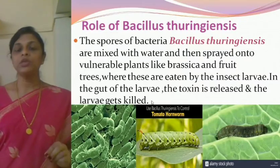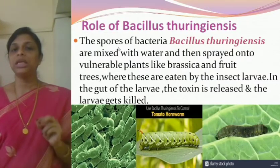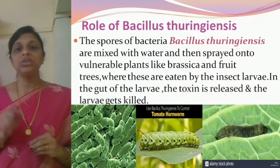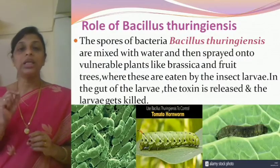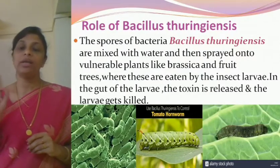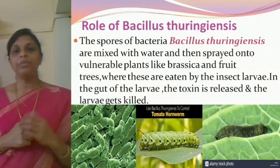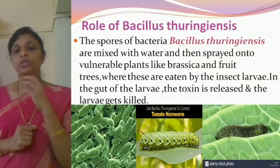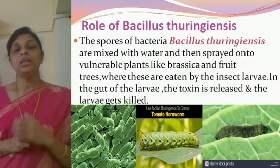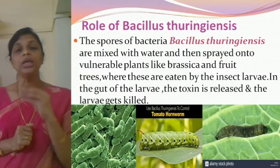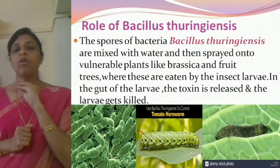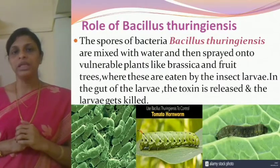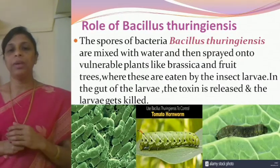The gene responsible for the production of this toxin in Bacillus thuringiensis has now been discovered. The name of the gene is the Cry gene (C-R-Y). You will study this in detail in the chapter on Biotechnology and Applications of Biotechnology. For now, you should know that Bacillus thuringiensis is used in controlling the insects which destroy crop plants, especially Brassica and other vulnerable plants and fruit trees.